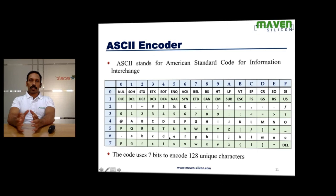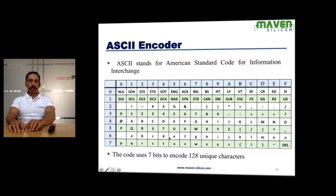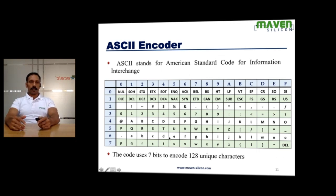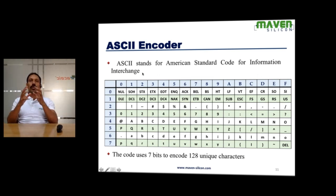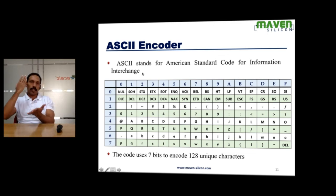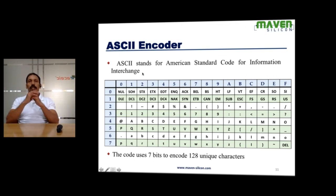The best example for an encoder is the ASCII encoder. Whatever key values you provide, basically it produces the equivalent binary based on the ASCII table. ASCII defines the equivalent value — this code uses seven bits to encode 128 unique characters, and it has been upgraded to eight bits. ASCII stands for American Standard Code for Information Interchange. If anyone wants to design an encoder for a keyboard, you have to follow ASCII standards, and based on ASCII, the encoder converts the input key into its equivalent binary value.